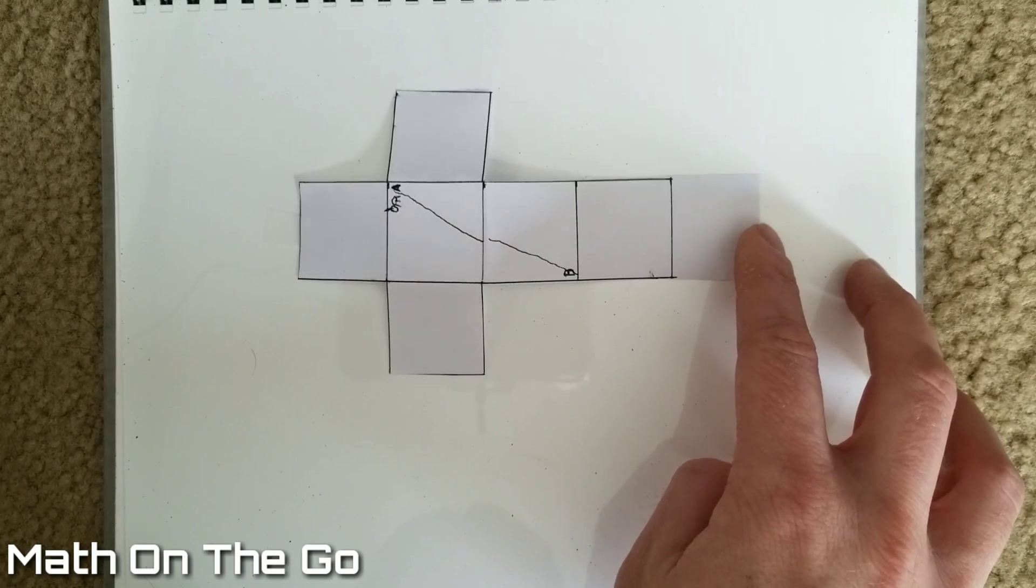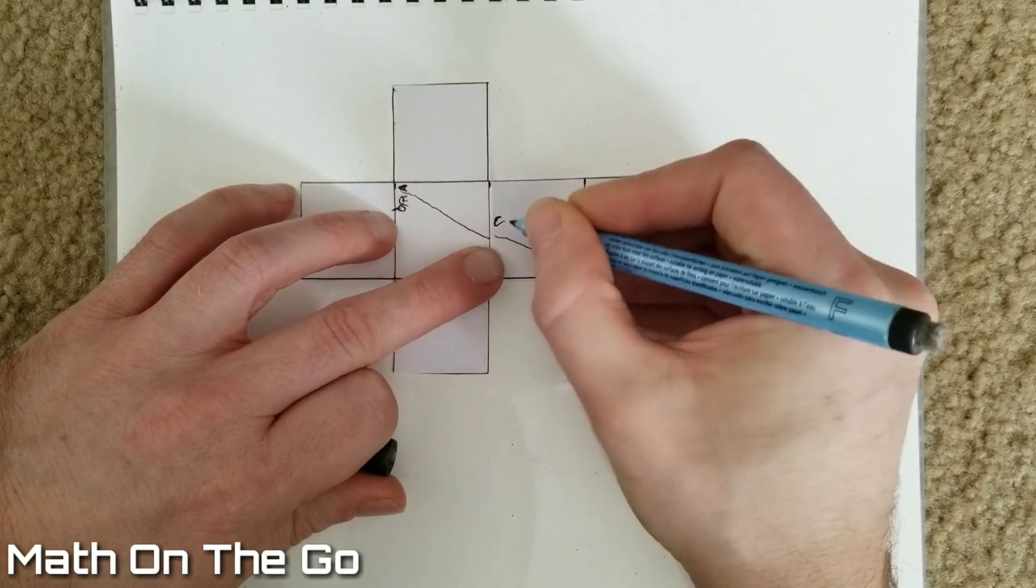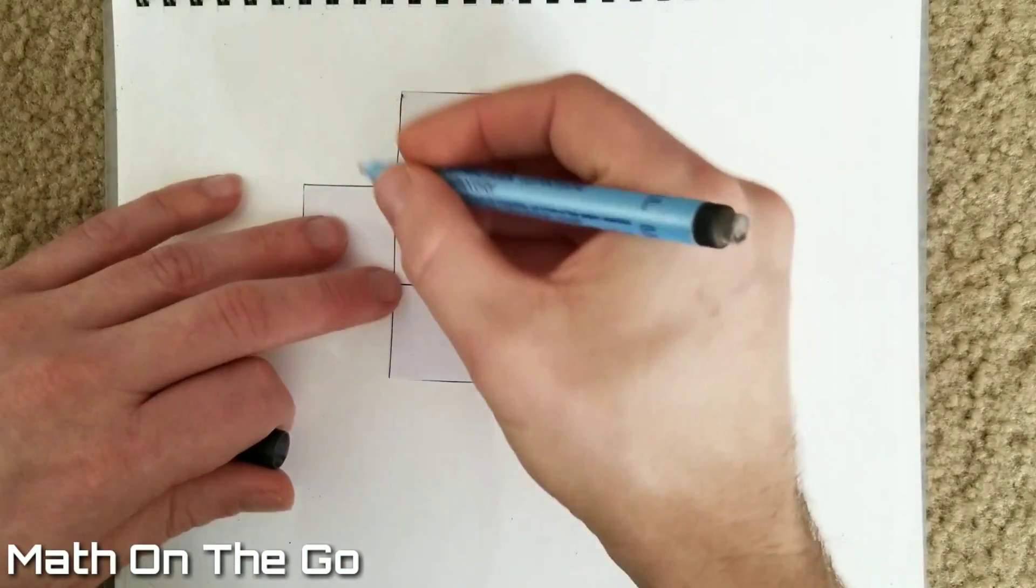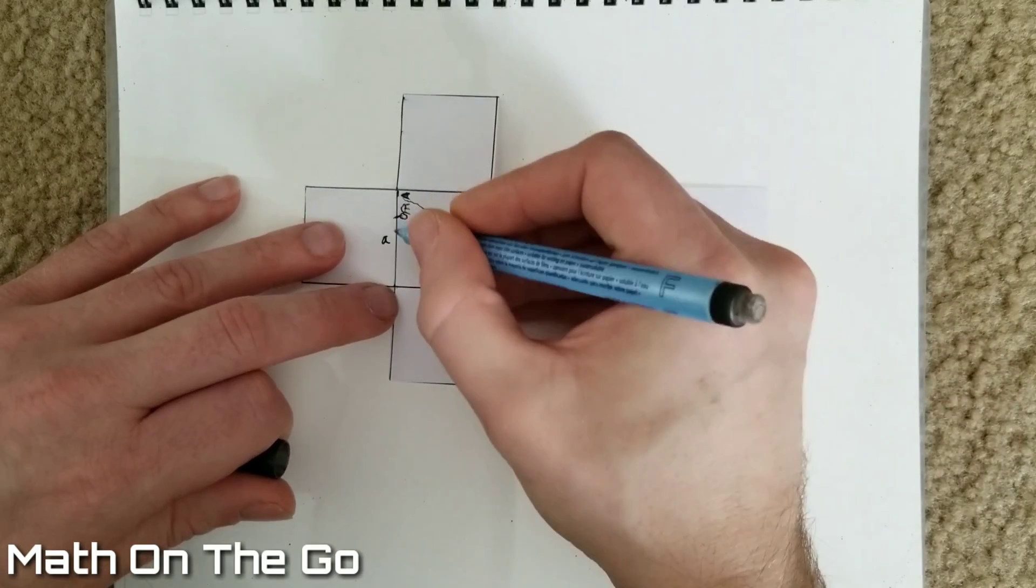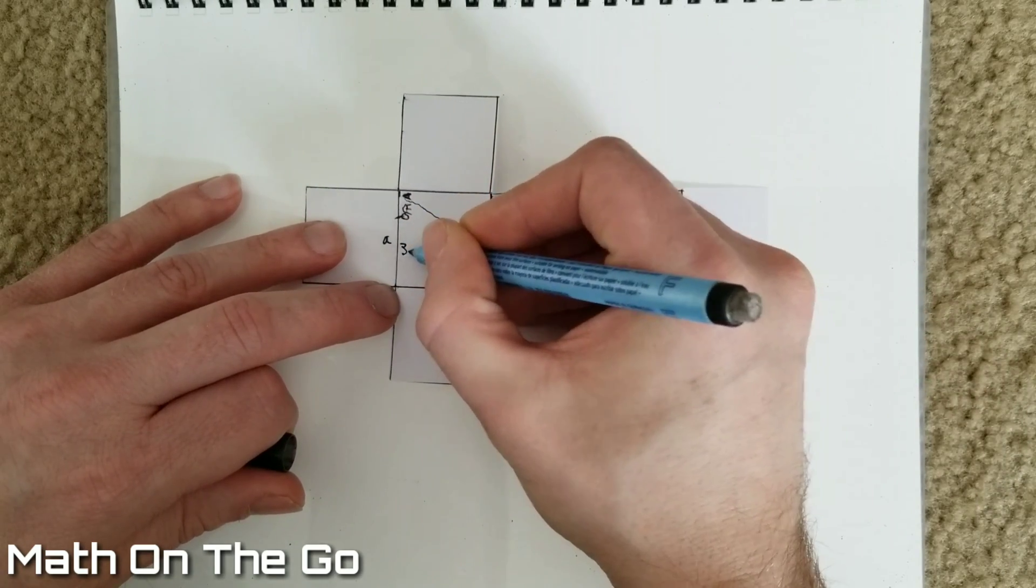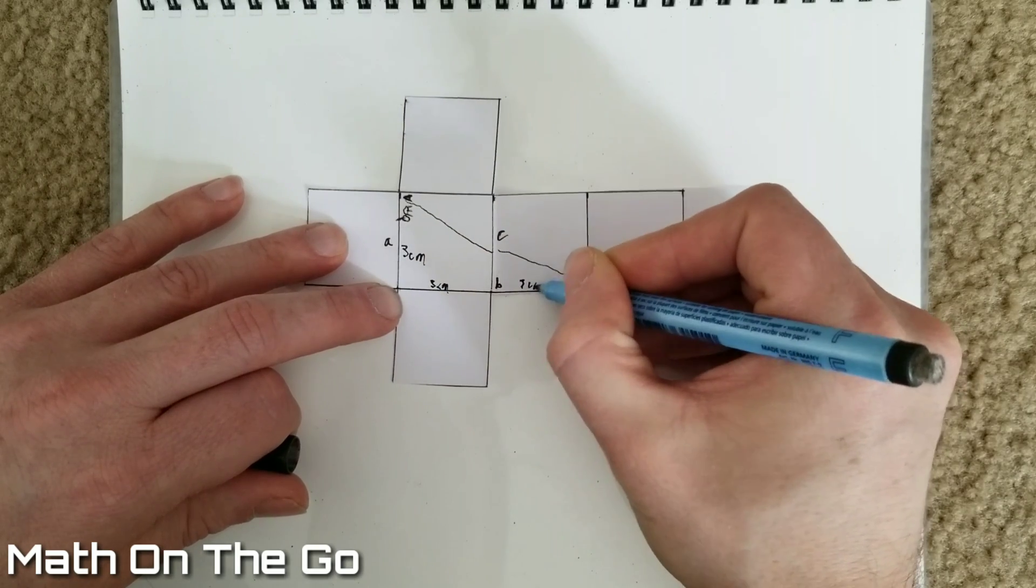We'll mark the straight line from A to B as our C, and then this will be side A, and this will be side B. This side is three centimeters, this is three centimeters, this is three centimeters, this is three centimeters.